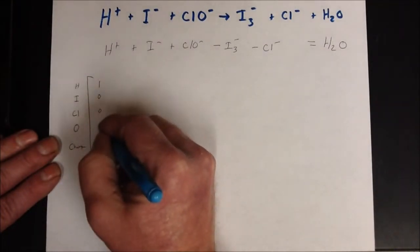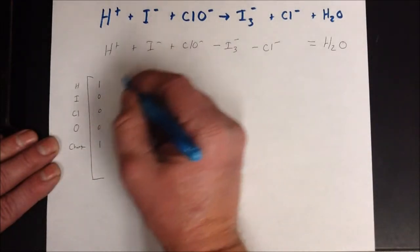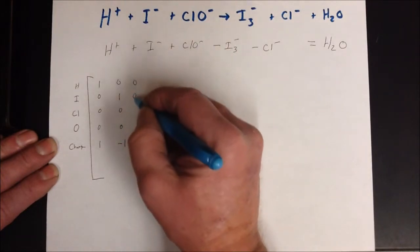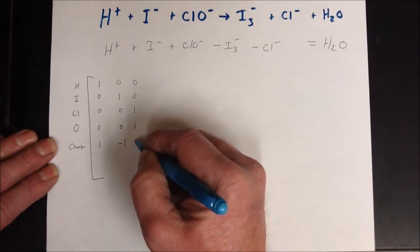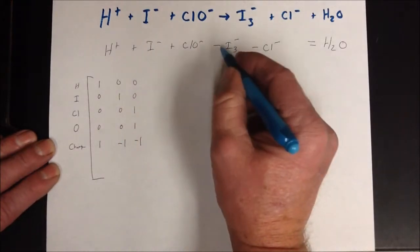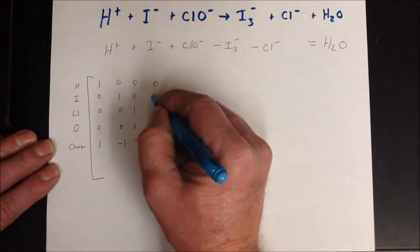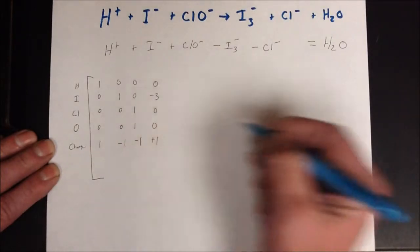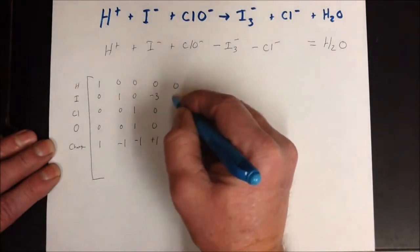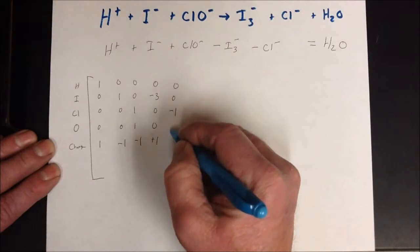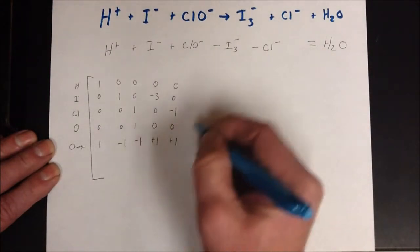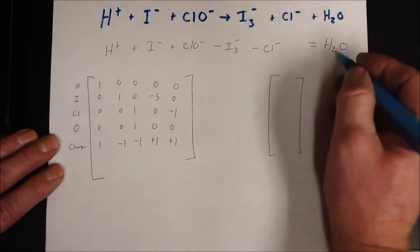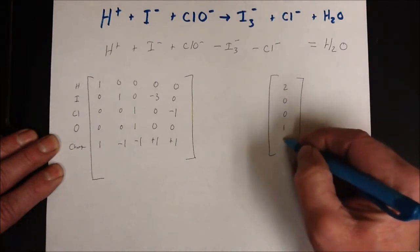Filling in the 5×5 matrix: Reactant 1 (H⁺): 1H, 0I, 0Cl, 0O, charge +1. Reactant 2 (I⁻): 0, 1, 0, 0, charge −1. Reactant 3 (ClO⁻): 0, 0, 1, 1, charge −1. Reactant 4 (I₃⁻, subtracted): 0, negative 3, 0, 0 — and since we're subtracting a −1 charge, that's positive 1. Reactant 5 (Cl⁻, subtracted): 0, 0, negative 1, 0, positive 1. The product matrix (H₂O): 2, 0, 0, 1, 0. This is a 5×5, so no rows need to be dropped.